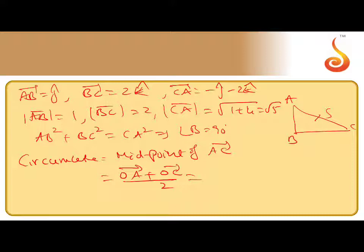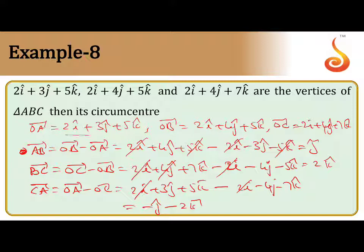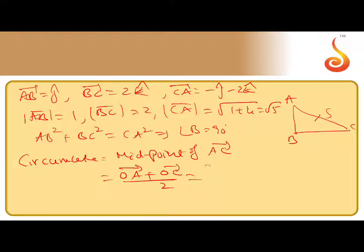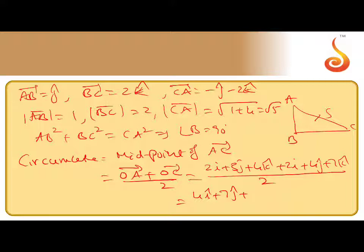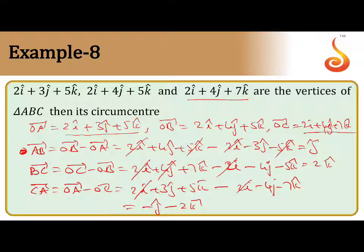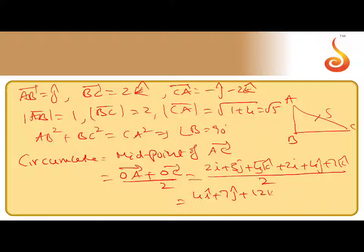You can take what is OA vector and OC vector from the previous step. OA vector is 2i plus 3j plus 5k and OC vector will be 2i plus 4j plus 7k. 2i plus 3j plus 5k plus 2i plus 4j plus 7k, whole divided by 2. So this will give 4i plus 7j and 12k by 2. So this will give 2i plus 7 by 2 j plus 6k.